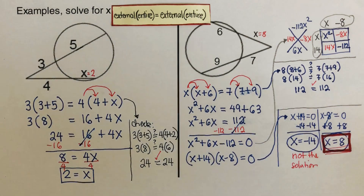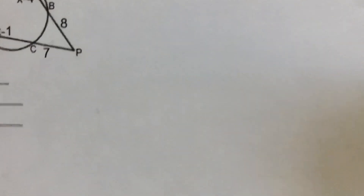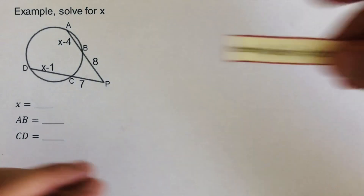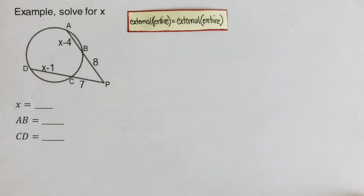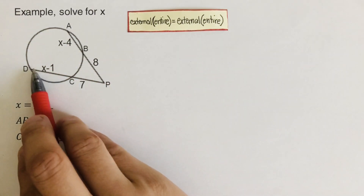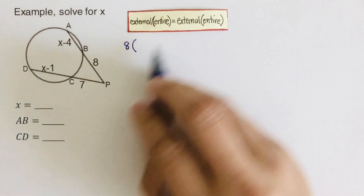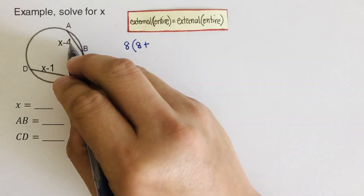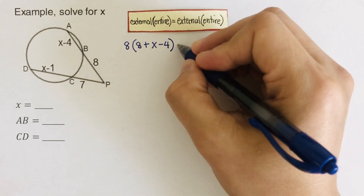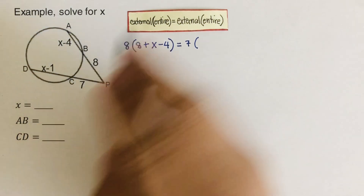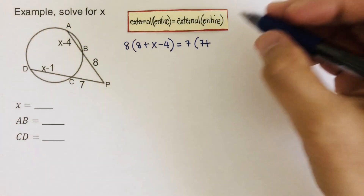Now let's move on to the next problem. What happens when the measures are given as expressions? The process is exactly the same. We write the external first: that's 8, times the entire which is 8 plus (x minus 4). This equals the external of the other secant, which is 7, times the entire: 7 plus (x minus 1).